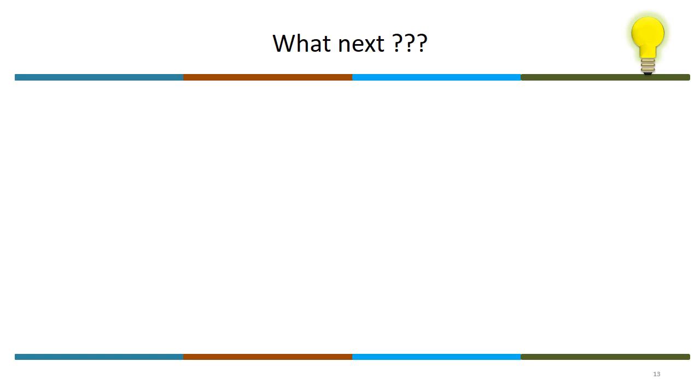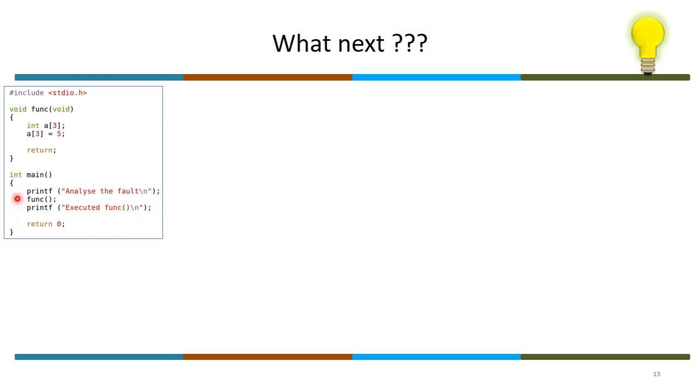What next? Can you solve this? Can you analyze this very simple code snippet? Analyze the fault if there is any. I am invoking a function. The function declares an array of three integers, assigning value to a of three. If you declare an array of integers three, the index will be 0, 1, 2. And you are assigning to 3 - what happens?